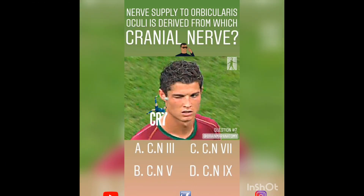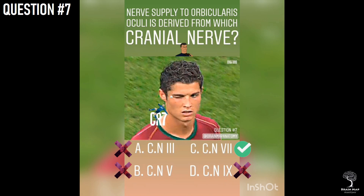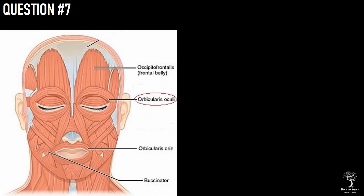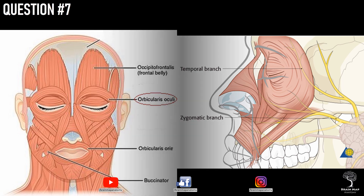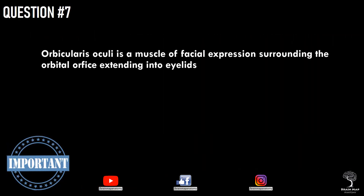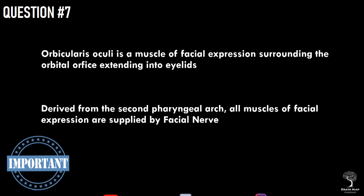Question 7. Nerve supply to orbicularis oculi is derived from which cranial nerve? The right answer is option C, cranial nerve 7, the facial nerve. The orbicularis oculi is a striated, voluntary muscle of facial expression that closes the eyelids. It arises from the nasal part of the frontal bone, from the frontal process of the maxilla in front of the lacrimal groove, and from the medial palpebral ligament. The fibers are directed laterally, occupying the eyelids and surrounding the circumference of the orbit. Without any exceptions, all muscles of facial expression are supplied by cranial nerve number 7. Take home message: orbicularis oculi is a muscle of facial expression surrounding the orbital orifice, derived from the second pharyngeal arch, and all muscles of facial expression are supplied by the facial nerve.